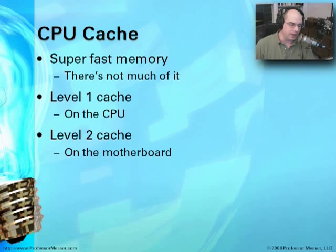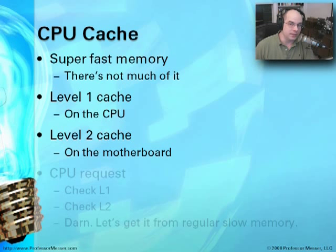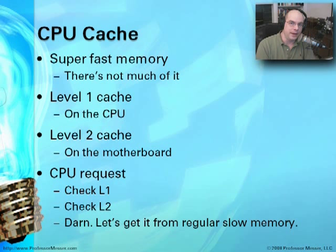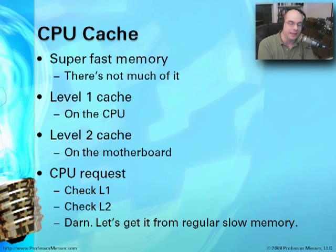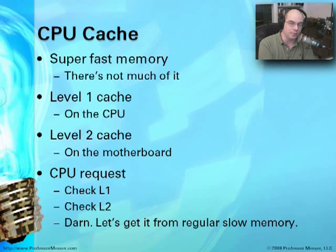The Level 1 cache is usually on the CPU itself. In the past, the L2 cache was on the motherboard, but more and more the L2 cache is now also on the CPU itself. Often we'll find a Level 3 cache on the motherboard. The CPU first looks to the L1 cache; if it's not there — a cache miss — it goes to L2, and if not there, it goes to regular RAM on the motherboard, which is much slower.